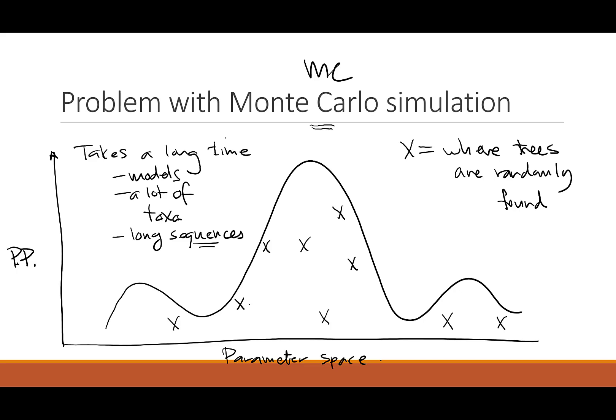One of the problems that we discussed very briefly with Monte Carlo simulation, which is this random simulation, is that sometimes it takes a while to get to the right optimum. Depending on your models, the amount of taxa that you have or the number of taxa and the length of your sequences, it can take a very, very long time to get to the optimum, especially if you're doing random searches. And so this is the beauty of the Bayesian analysis that we're going to talk about.